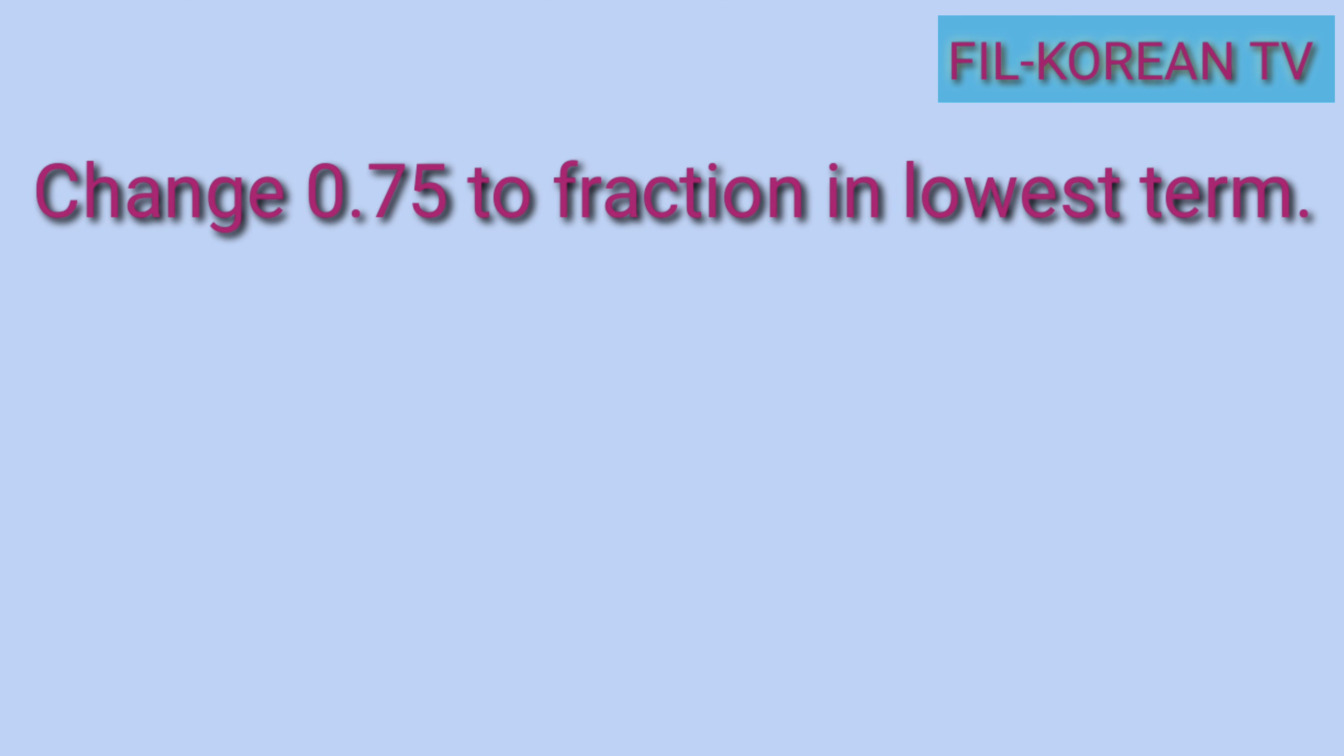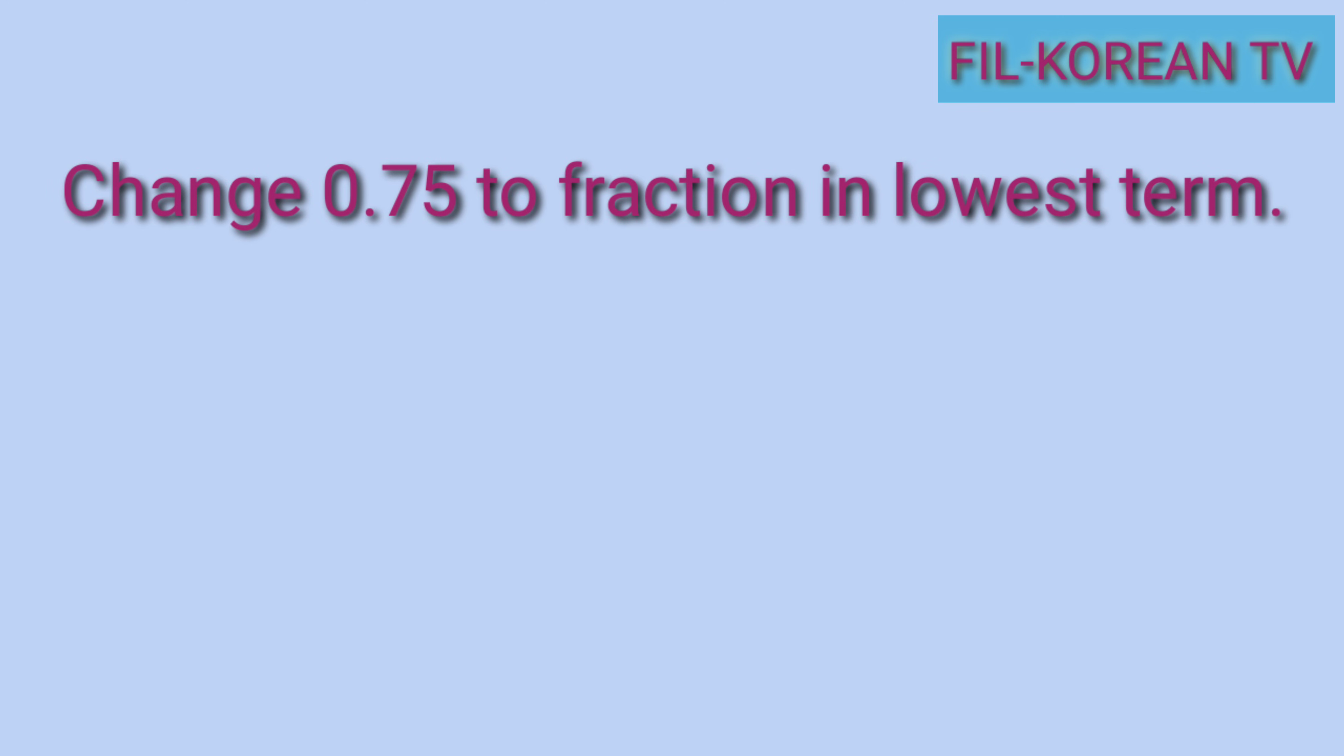Let's take this problem as an example. Change 75 hundredths to fraction in lowest term. The fastest way to write decimals as fractions is to write the number after the decimal point as a numerator and then use the power of 10 as a denominator. The number of digits after the decimal point will tell you how many zeros the denominator must have.